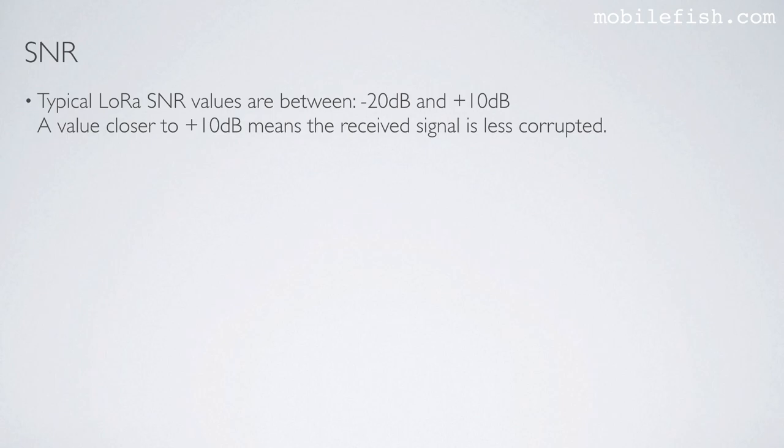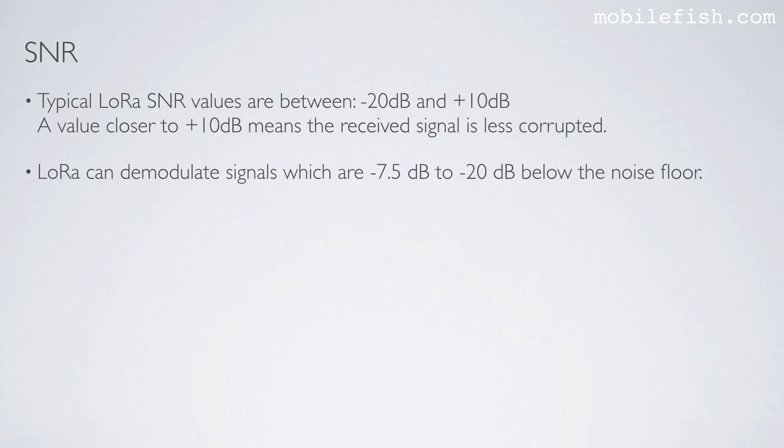Typical LoRa SNR values are between minus 20 dB and plus 10 dB. A value closer to plus 10 dB means the received signal is less corrupted. LoRa can demodulate signals which are minus 7.5 dB to minus 20 dB below the noise floor.